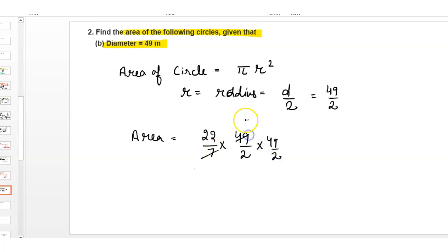So here, 49 divided by 7 gives 7, and 22 divided by 2 gives 11. So 11 multiplied by 7 multiplied by 49, divided by 2.